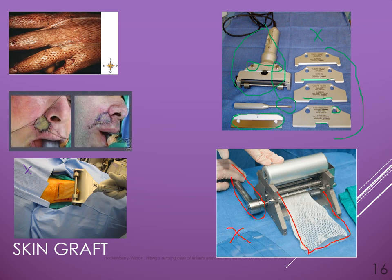A full thickness skin graft incorporates the epidermis, all of the dermis, and some of the underlying fat tissue or adipose tissue. These are good for covering small defects, such as a melanoma or something similar.